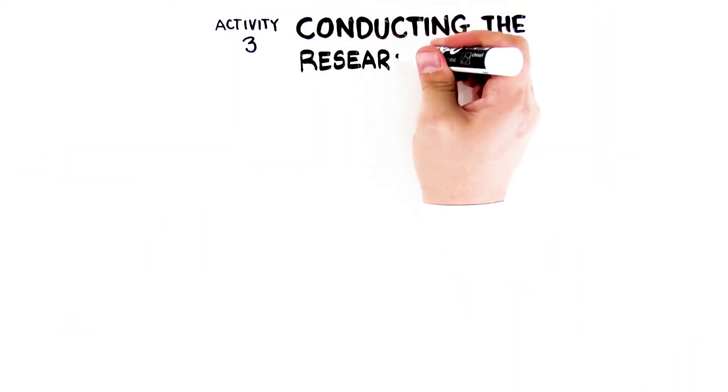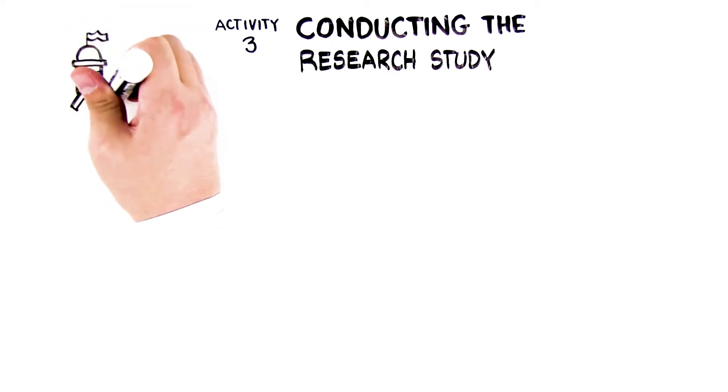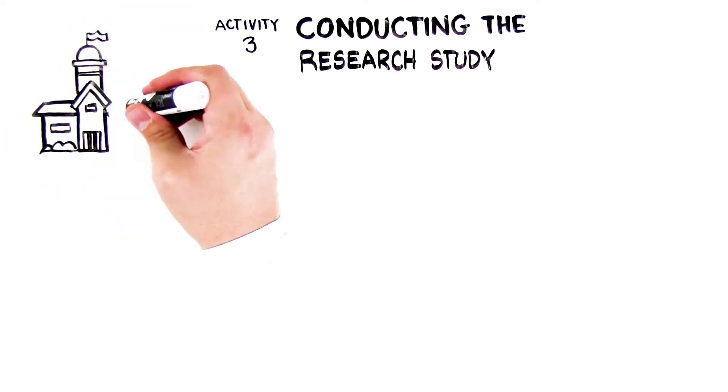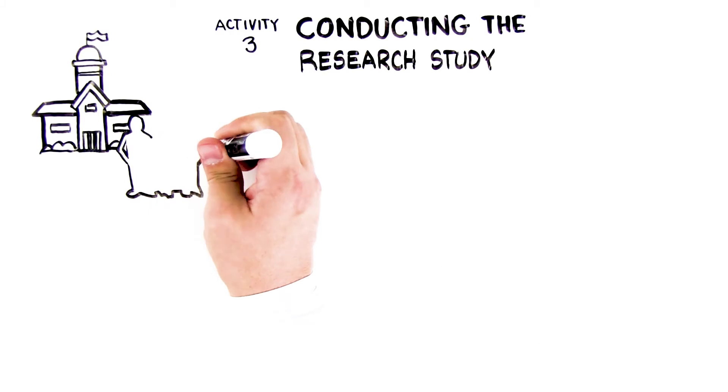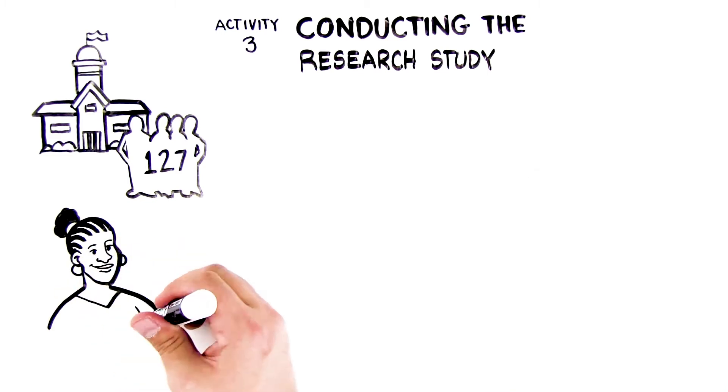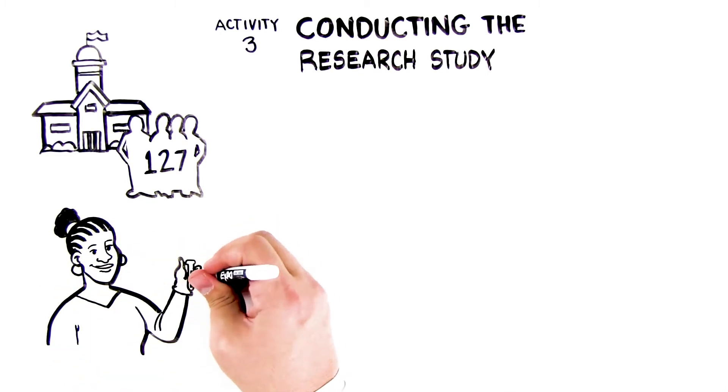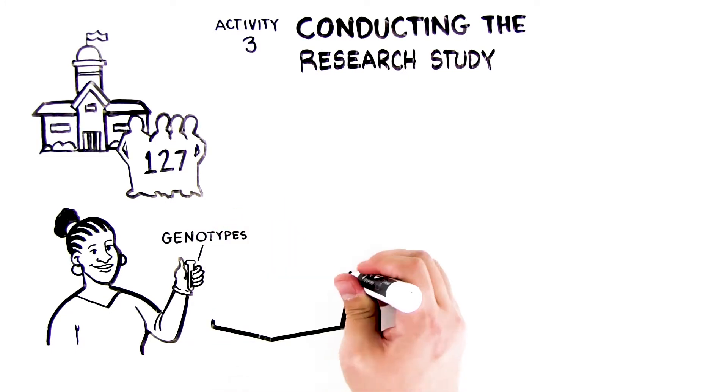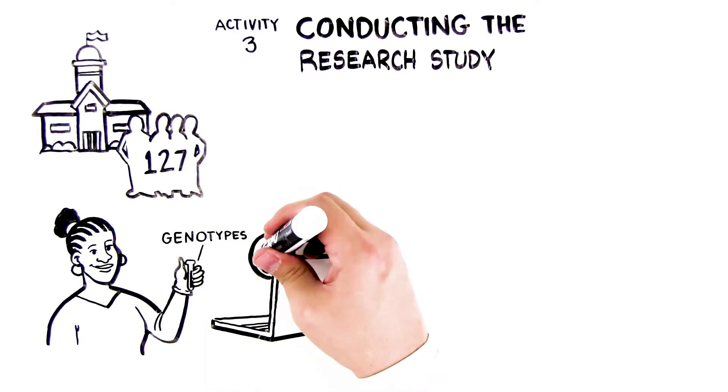Activity 3, Conducting the Research Study. A local university is conducting your human genetic study and has recruited 127 individuals to participate. Your class will help the university team determine the participant genotypes, with each student group determining the genotype of a different set of samples. Your results will be combined with those of the university, and you will then analyze and interpret the full data set.